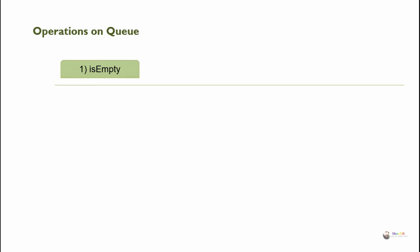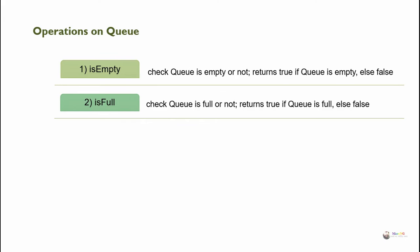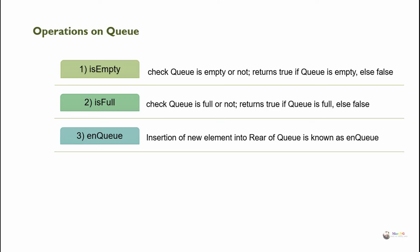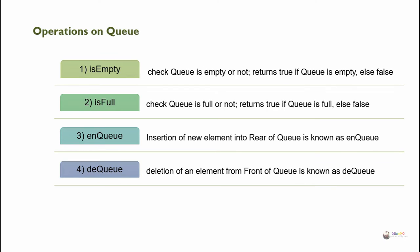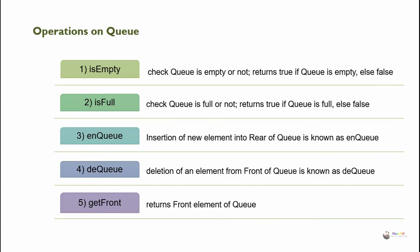Operations on Queue data structure: First, 'isEmpty' — checks if the Queue is empty or not, returns true if the Queue is empty, else false. 'isFull' — checks if the Queue is full or not, returns true if the Queue is full, else false. 'Enqueue' — insertion of a new element into the rear of the Queue. 'Dequeue' — deletion of an element from the front of the Queue. 'getFront' — returns the front element of the Queue.